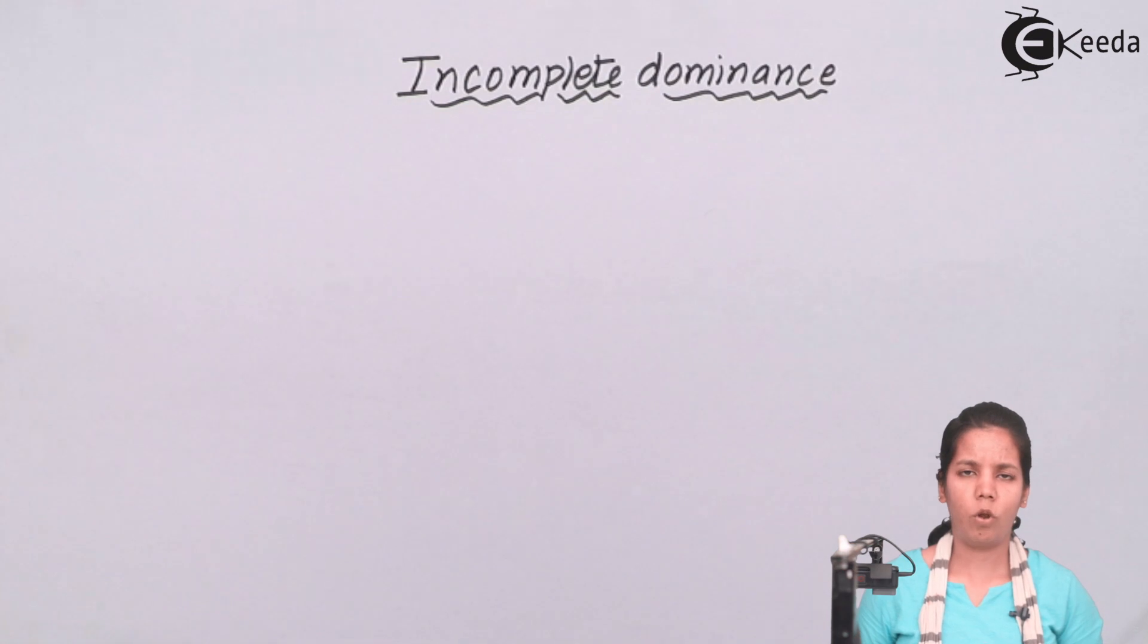According to Mendel's law, there was co-dominance, there was dominance, and the law of independent assortment which stated certain laws which were clear and easy. Now there is a certain thing which is called incomplete dominance.